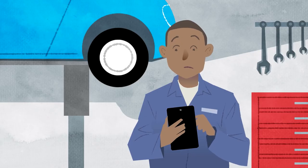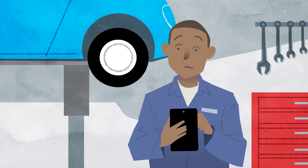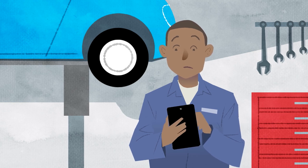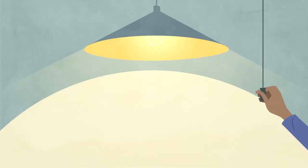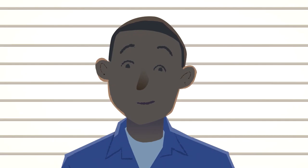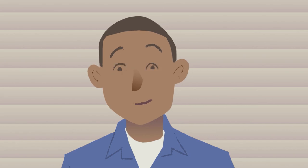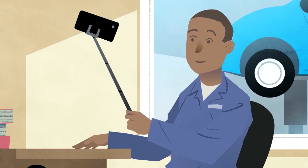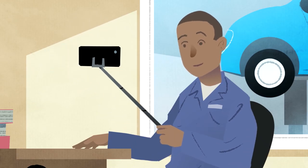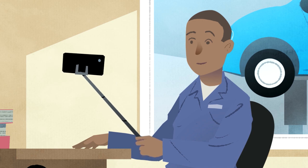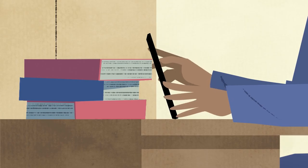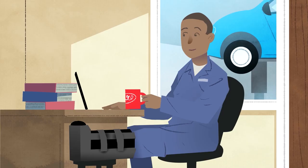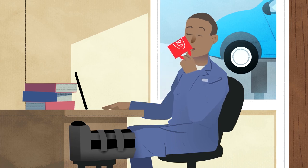Wherever you choose to make your video call, you'll need to make sure it is private, quiet and well lit. But avoid a bright light or sunshine behind you, just as if you're taking a photo. If you're using a smartphone or tablet, try to keep it as steady as possible — prop it up and leave your hands free for something more important.